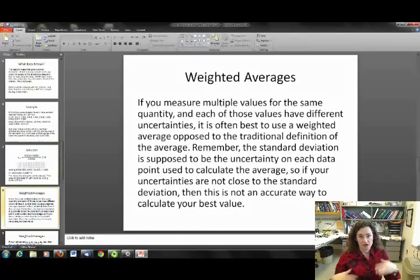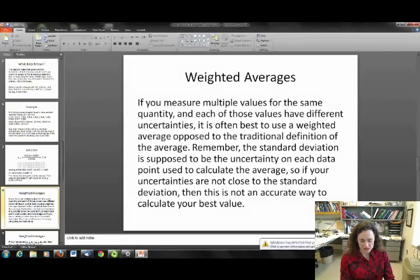Okay, the next topic that I wanted to cover was weighted averages. You use this sometimes if you're taking a bunch of measurements of the same quantity, but those measurements all have very different uncertainties. Then it's better to use a weighted average instead of the traditional definition of the average, where you just add the numbers up and divide by the number of total measurements you took. So if you remember the definition of standard deviation, the standard deviation is the uncertainty on each particular value x sub i. And if you think x bar is your mean or average, x sub i are the numbers that you added up to make your average. So that standard deviation is supposed to be the uncertainty on each data point used to calculate your average. So if your uncertainties are not close to your standard deviation and if they're not similar to one another, then that's not the best way to obtain your best value, and the weighted averages would be the way to go.